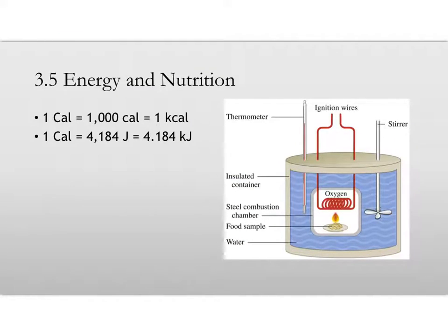Alright, section five is energy and nutrition. You probably know that if you look at a nutrition label, it tells you how many calories are there. But what you may not know is that the calories listed are kilocalories. A capital C in the calorie means a kilocalorie, or one-thousand calories.